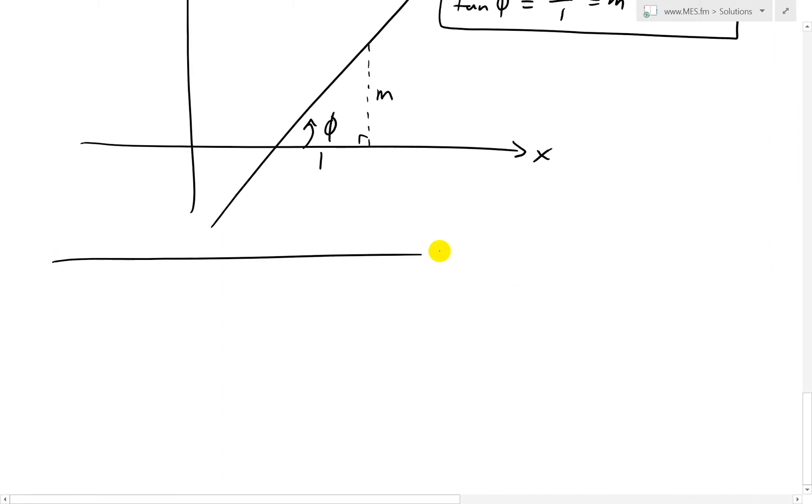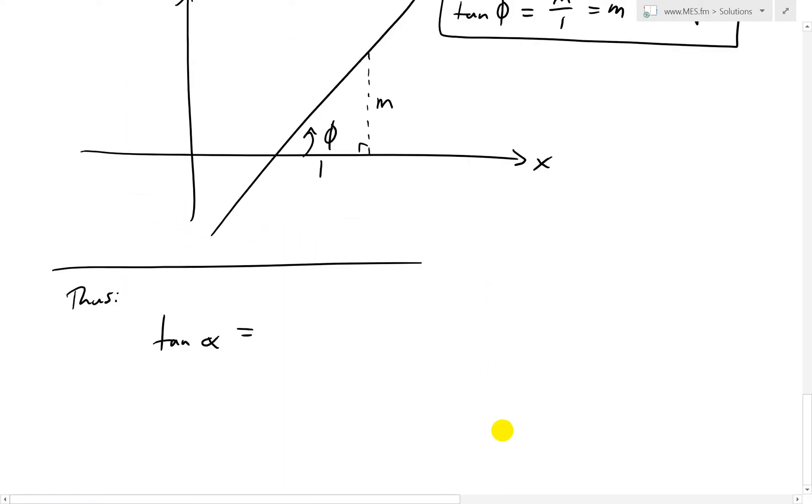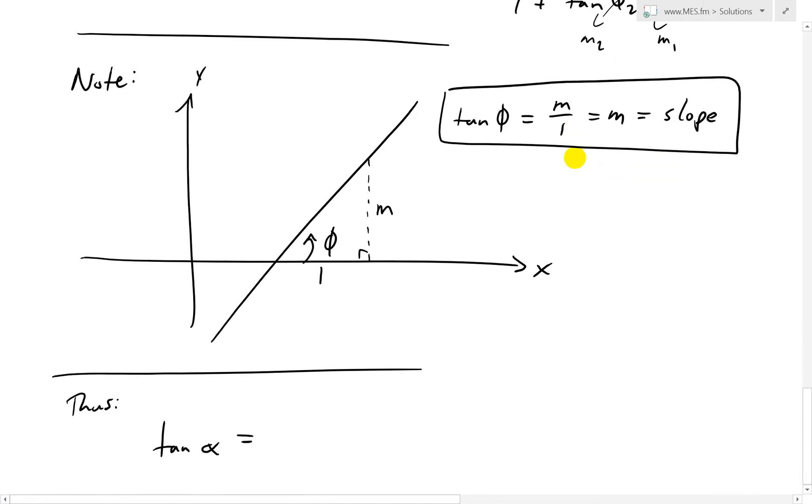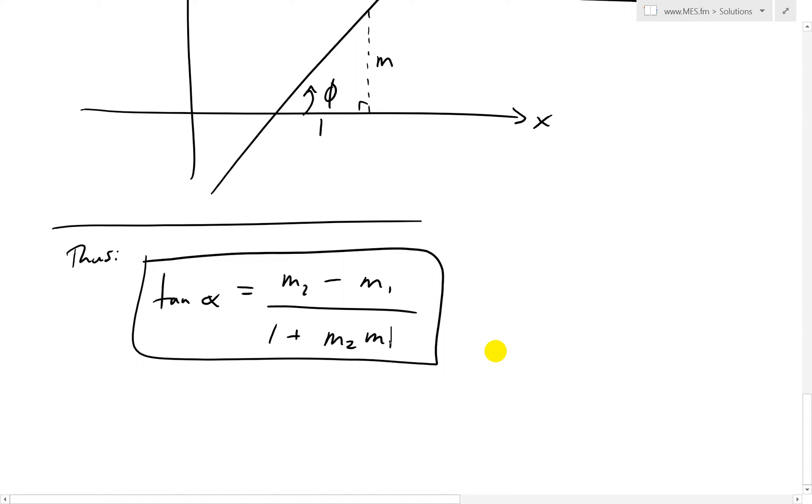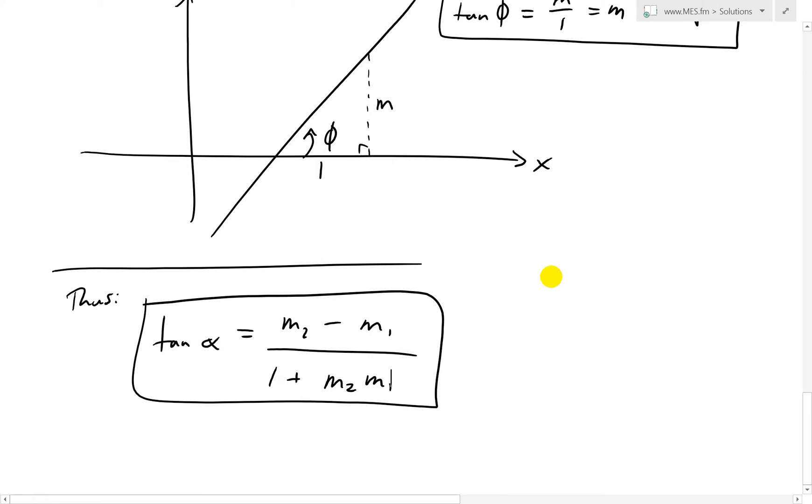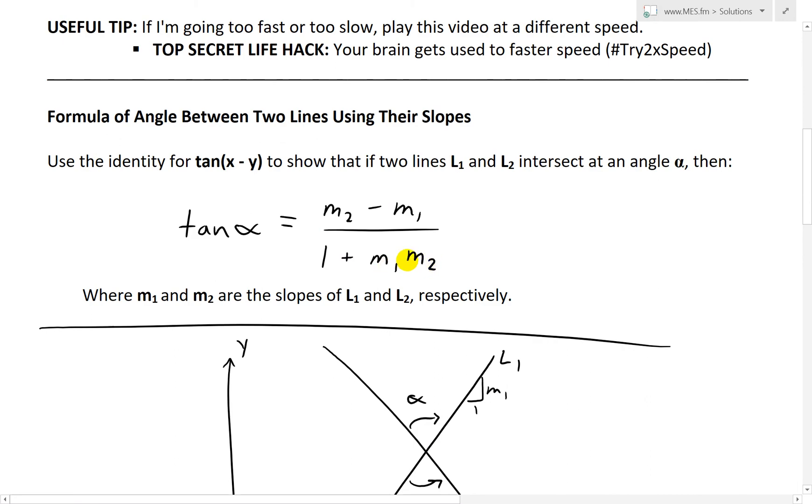Thus, what we finally have is tan alpha equals M2 minus M1 over 1 plus M2 M1. And there is our answer. This is the exact same one as above. That is the angle, and we can get that angle from the slopes of the two lines. You can take the inverse to get the exact angle there.